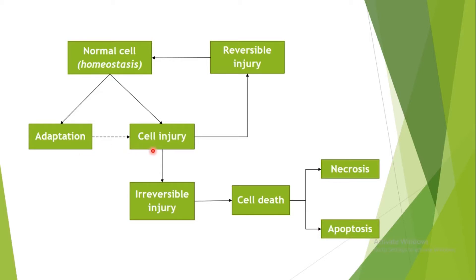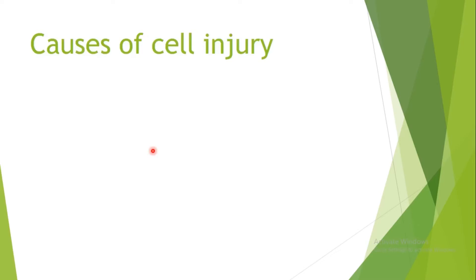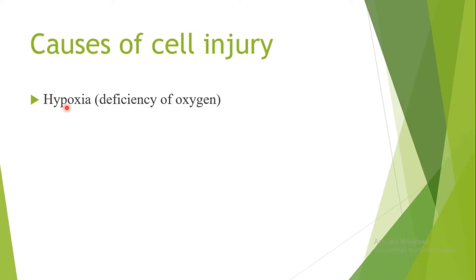The most important and most common cause of cellular injury is hypoxia. 'Hypo' means low and 'oxia' means oxygen, so hypoxia means low oxygen. It is defined as oxygen deficiency at the level of the tissues, and we're going to discuss hypoxia in a separate video.